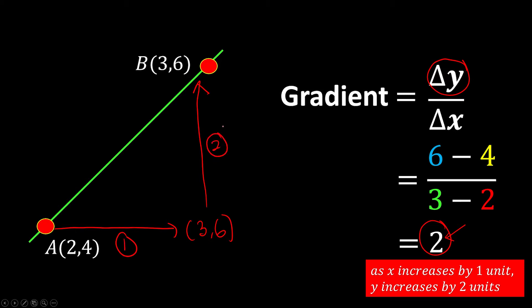One more thing we need to know is that for a straight line, the gradient is always constant. So if the gradient is 2 at one point, it is also 2 here, and also 2 here. The gradient never changes for a straight line.